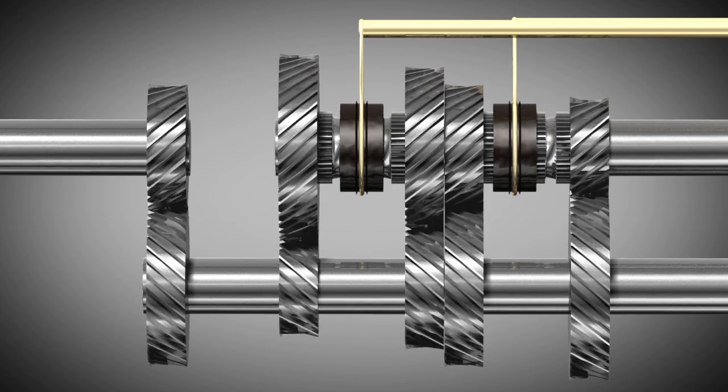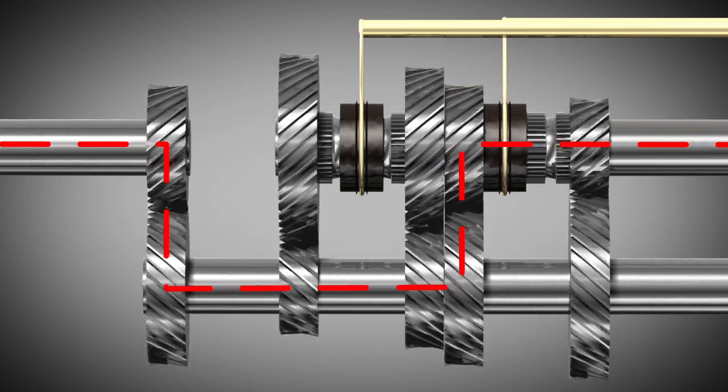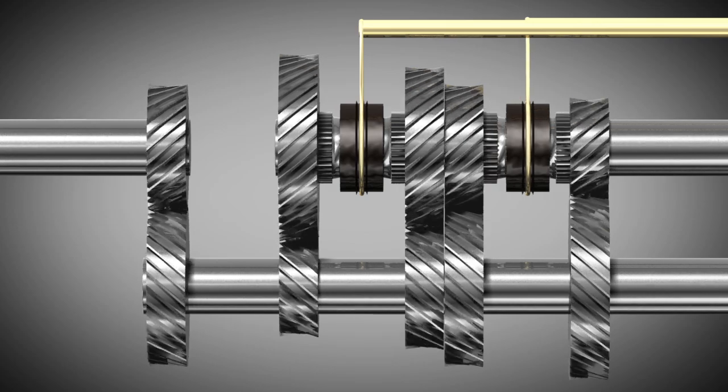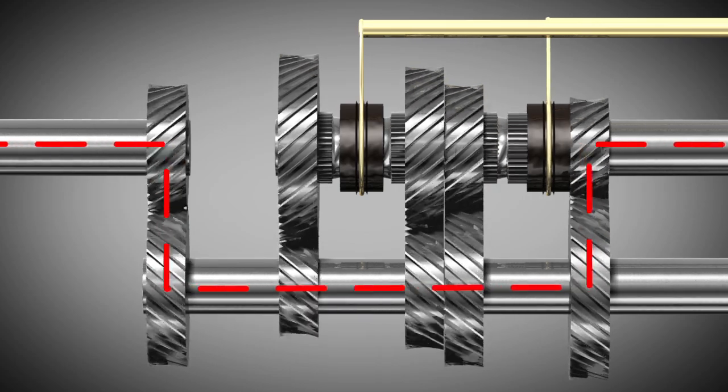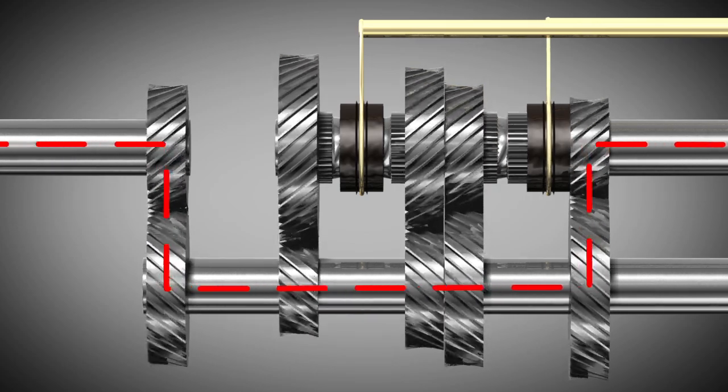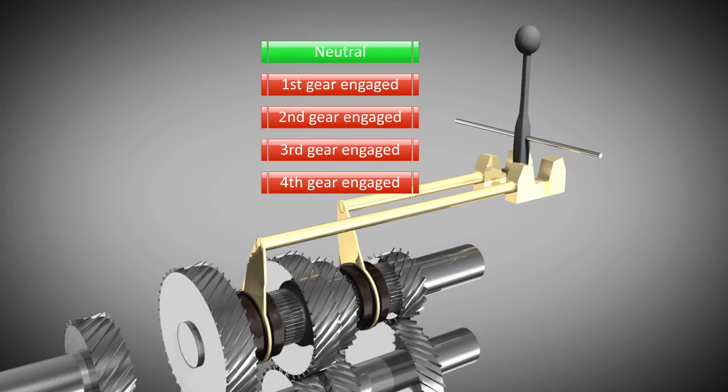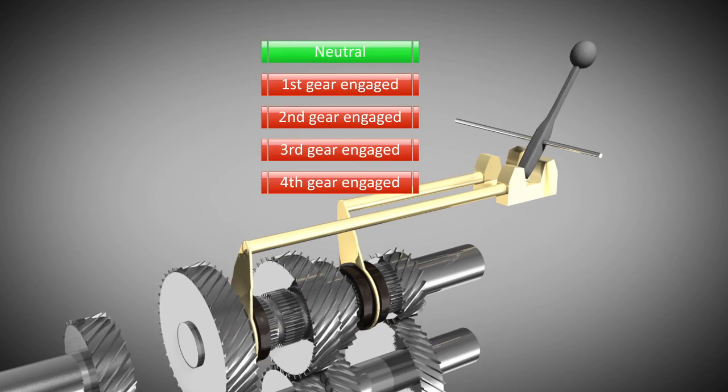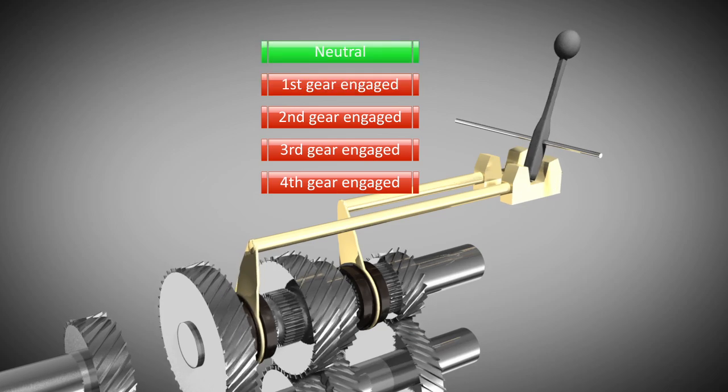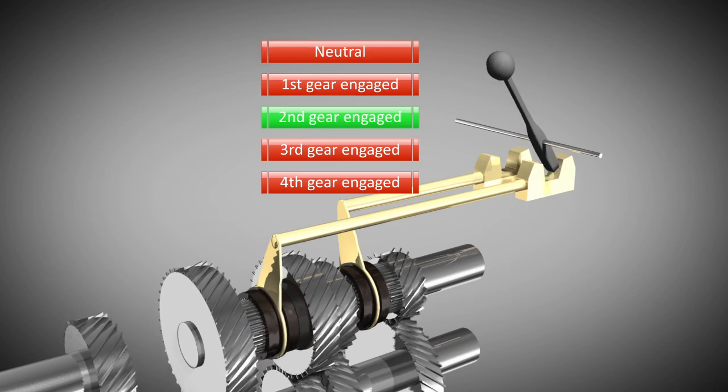The same is true for shifting from second to third gear and from third to fourth gear. This type of transmission is often referred to as an H-pattern because of the path that the shift lever takes as it selects the various gears.